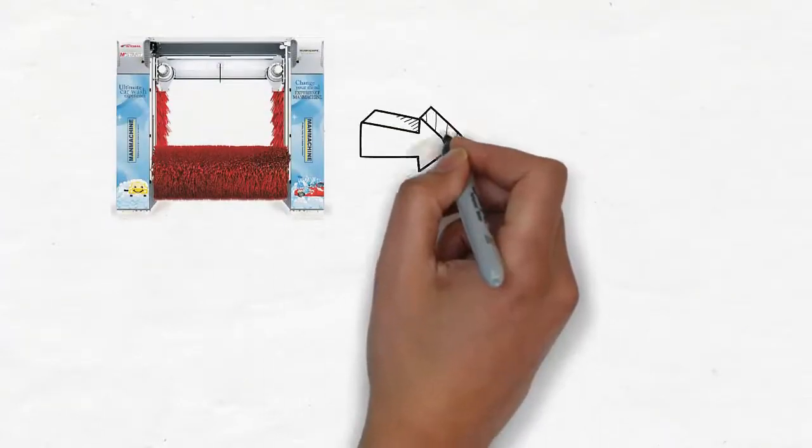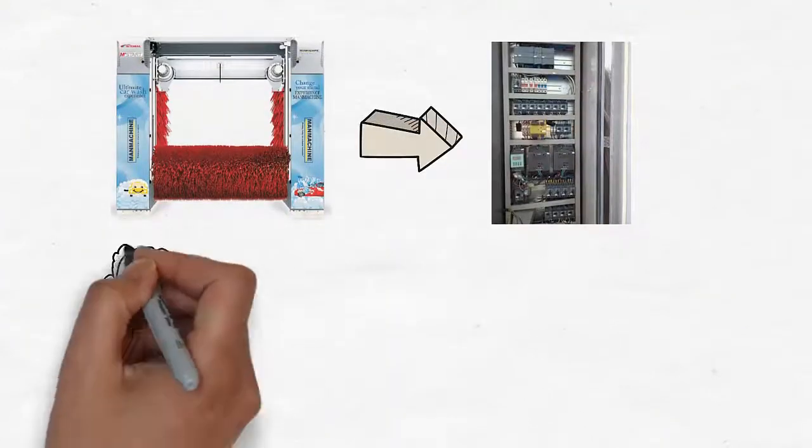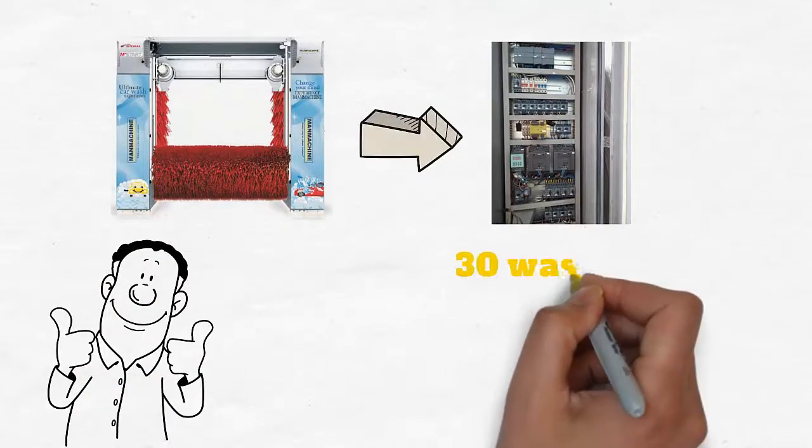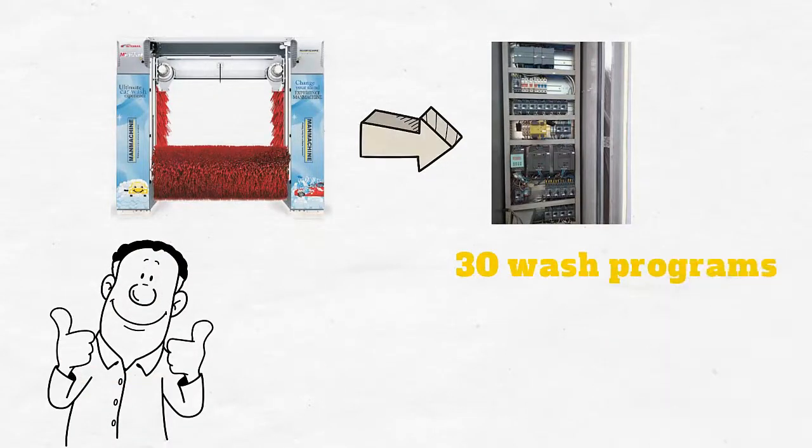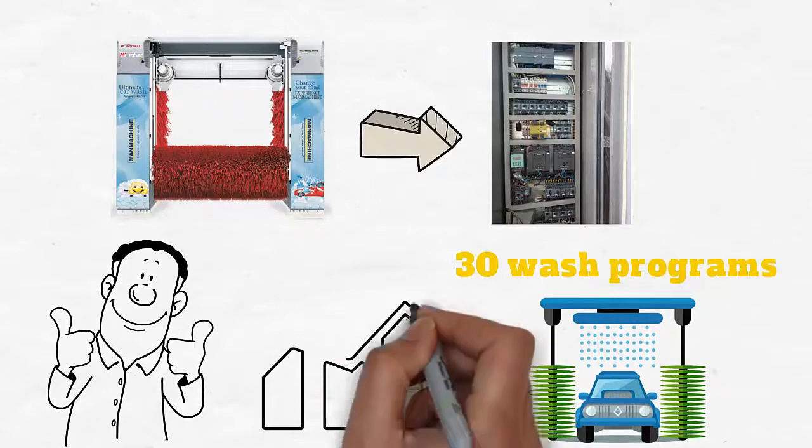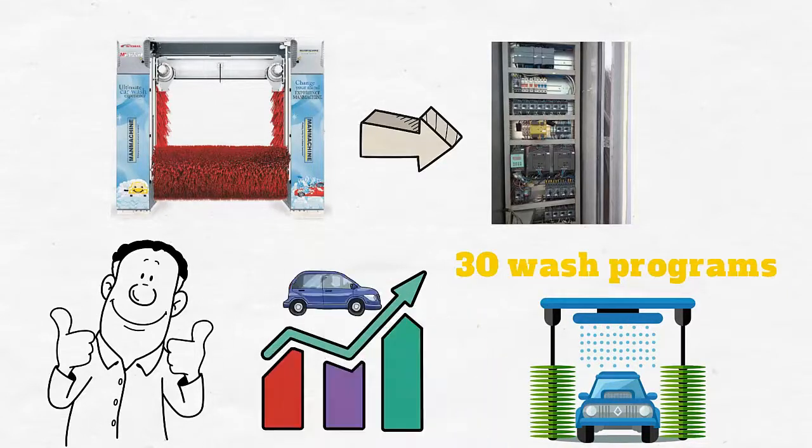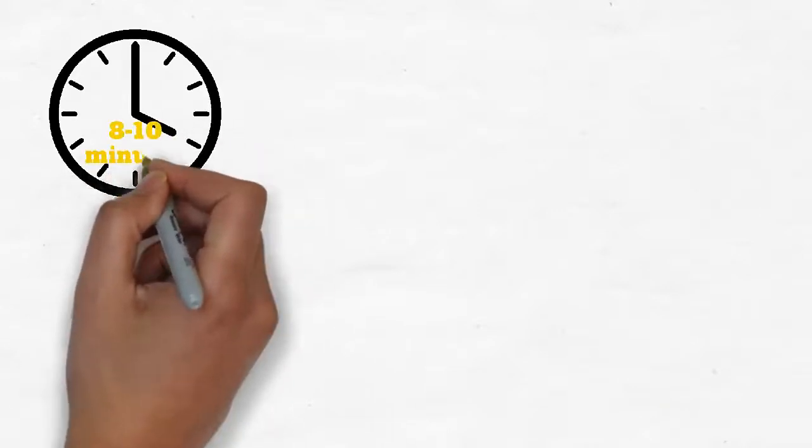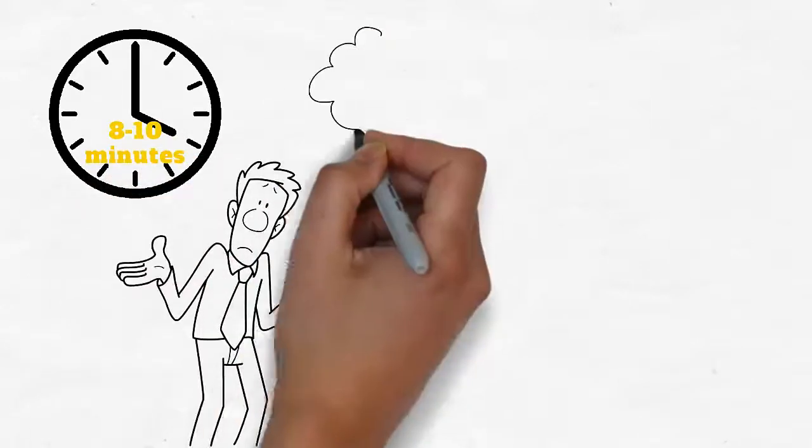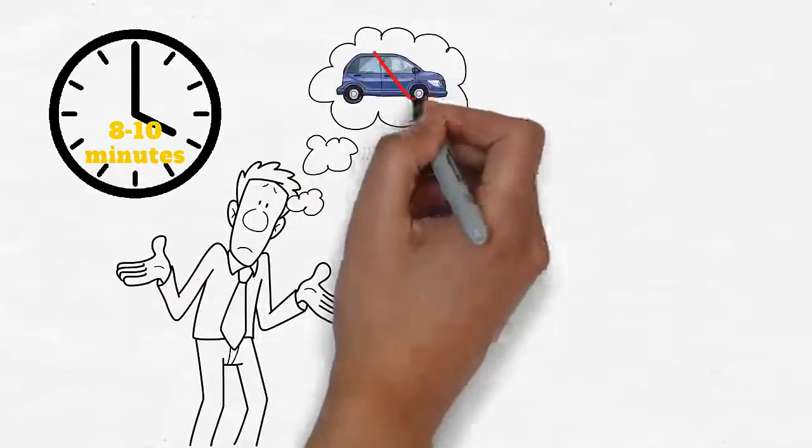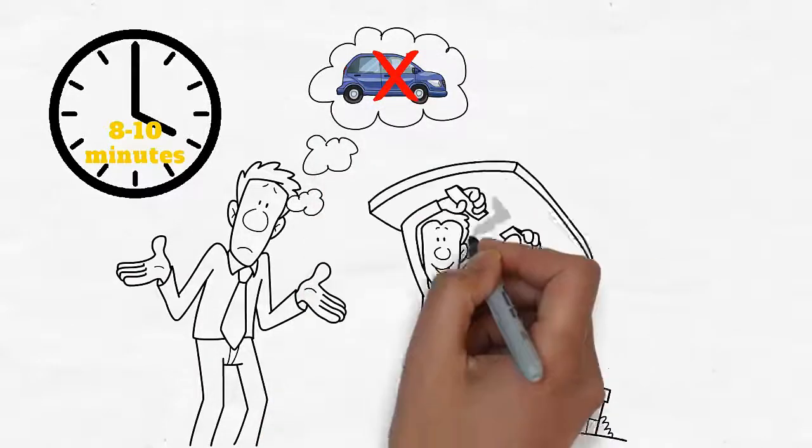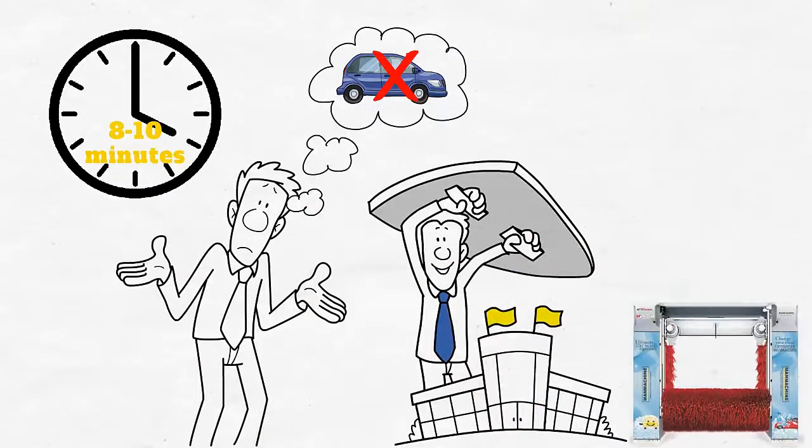MSTART panel is equipped with Siemens components, making it very reliable and offering more than 30 wash programs compared to local machines. That increases the number of cars we can do, as local machines take 8 to 10 minutes to wash a car and can't deliver more than 40 to 50 cars a day. With expanding business, MSTART will always stay with you.